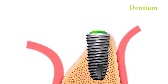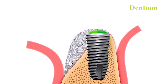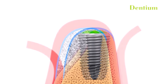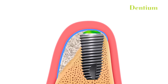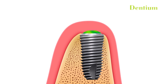When a bone graft is placed, it acts as a scaffold for the body's natural bone to grow around. Over time, the body replaces the graft material with its own bone, creating a solid foundation for implants.